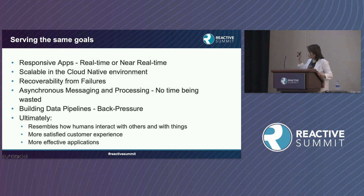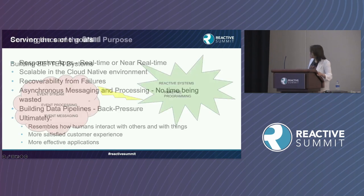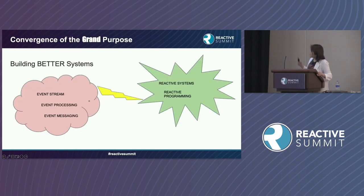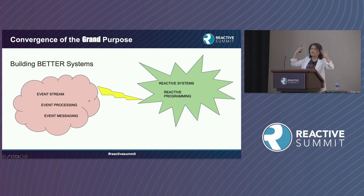Having systems that more closely resemble real human interactions brings more satisfactory customer experience and more effective applications. Event streaming and all these event-related things come together — what we're trying to do is build better systems that resemble how human beings do things.